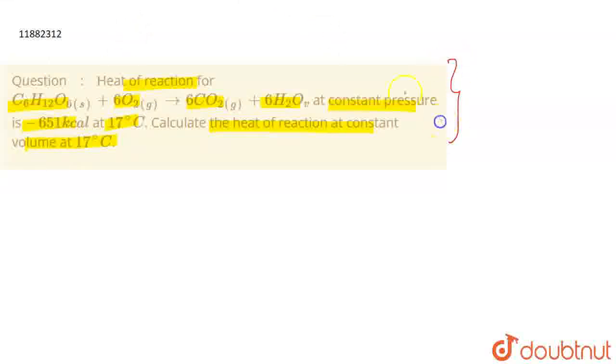This is the question. Now, see what you have given us. Heat of reaction is given. Delta H is given here. Minus 651 kilocalorie. This is minus 651 into 10 power 3.